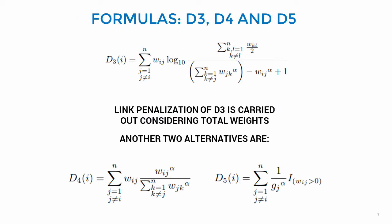D3, D4 and D5 are alternative formulas for the calculation of distinctiveness, where we use different penalization factors. In D3, we consider the sum of all arc weights in the network.